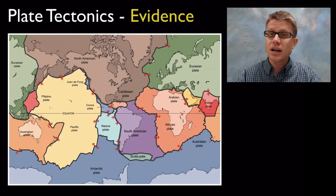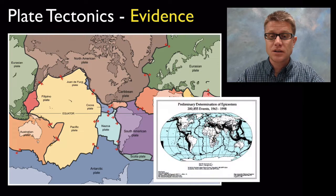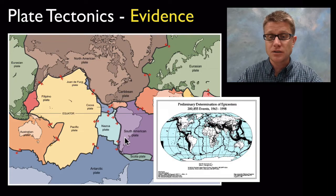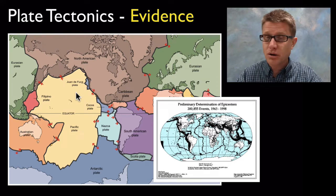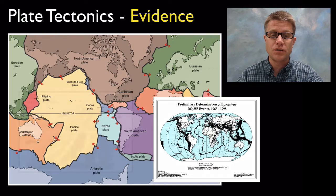There's a lot of evidence that shows this theory is correct. One piece of evidence is that we're finding earthquakes along the margins of the plates. If you take a picture of where all the earthquakes have been — this is from 1963 to 1998 — we're going to see that it matches up perfectly with where the plates are found.